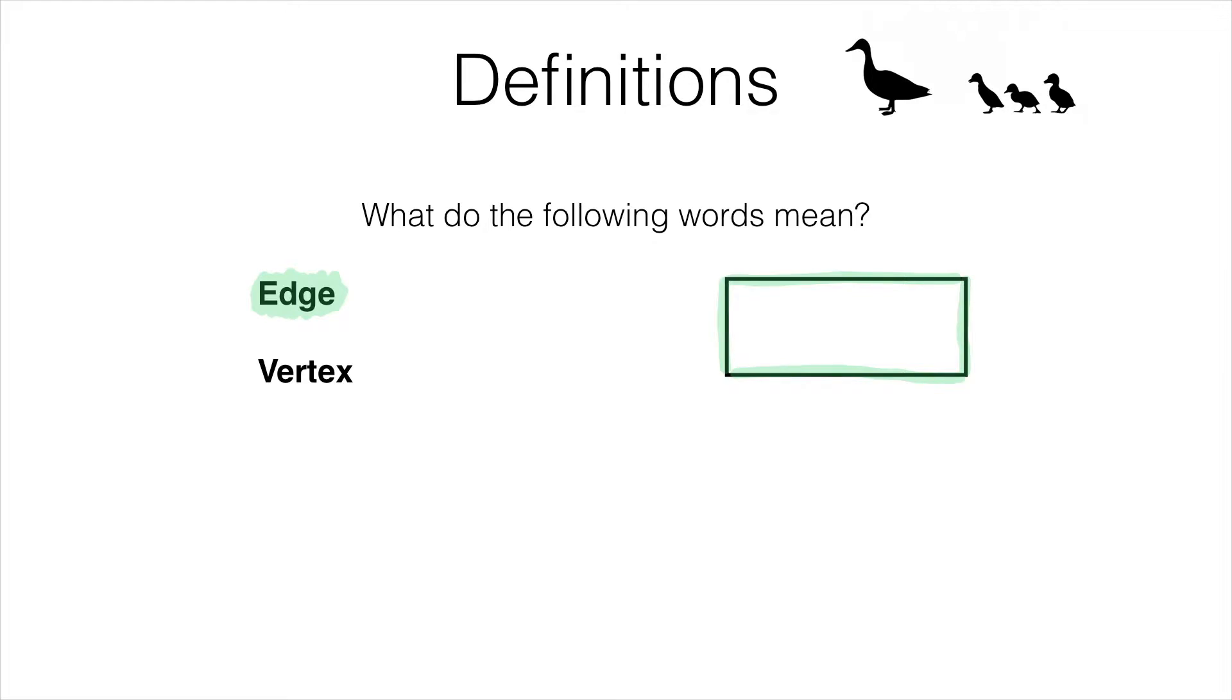Now a vertex is simply another word for corner. Again we prefer to use the word vertex in mathematics. Now a vertex, a corner, is simply a place where two edges meet in two-dimensional geometry. Here would be a vertex. You can see it's the meeting point of this edge along the top and this edge along here. We've also got another vertex here, here and here.